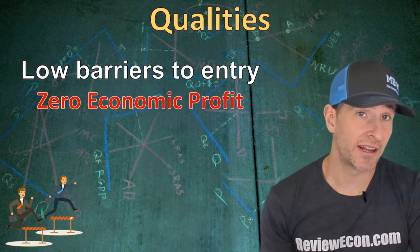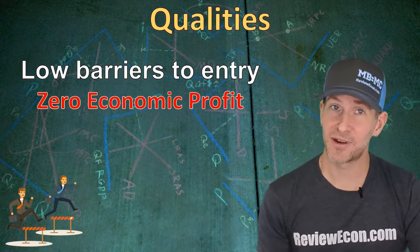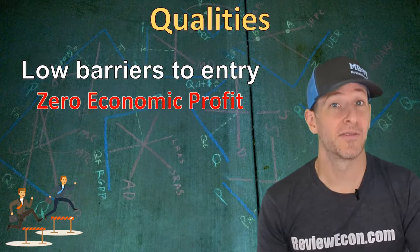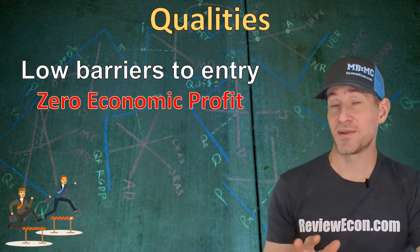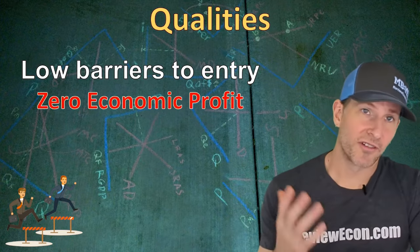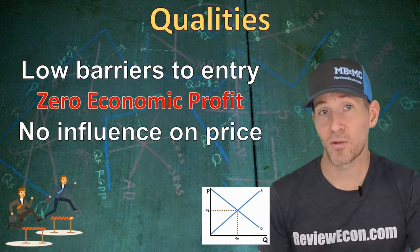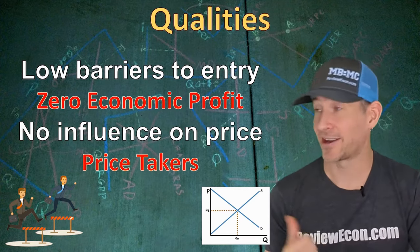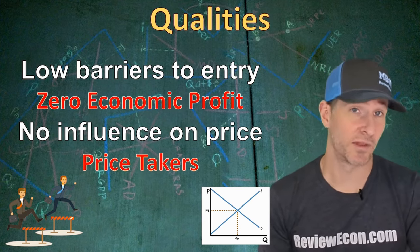When there are low or no barriers to entry, there is going to be zero economic profit for firms in the long run. That's because when firms are earning economic profit, more firms will come into the market, the price will fall, and the profit will go away. Likewise, if firms are earning economic losses, firms will exit, prices will rise, and firms will break even again. Zero economic profit means there is still a positive accounting profit. Also, firms within a perfectly competitive market have no influence on the price they charge — they are price takers. The supply and demand graph for the market dictates the price for each individual business.